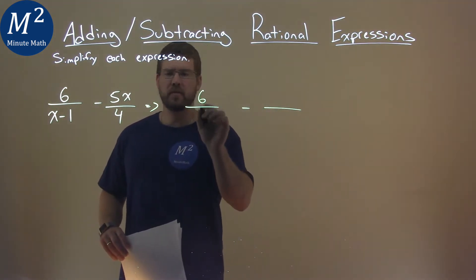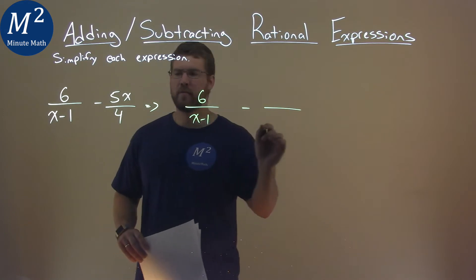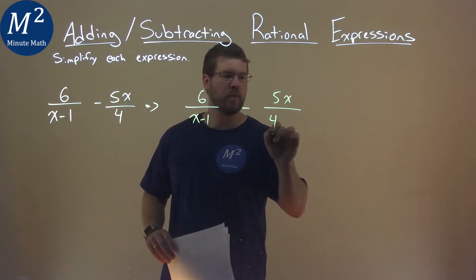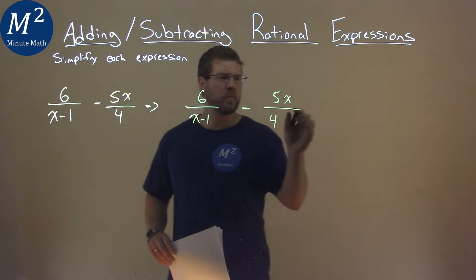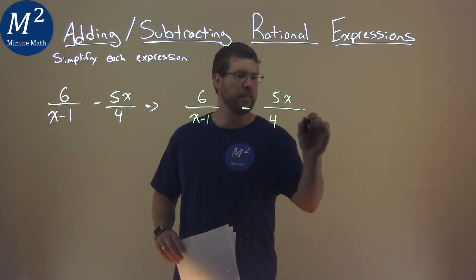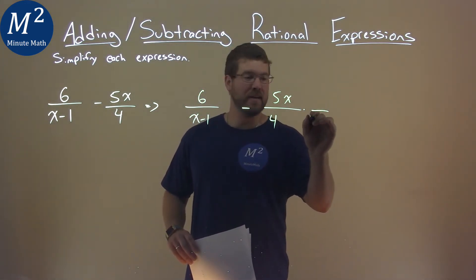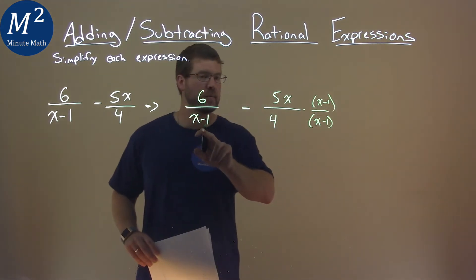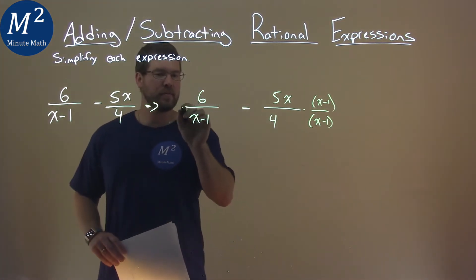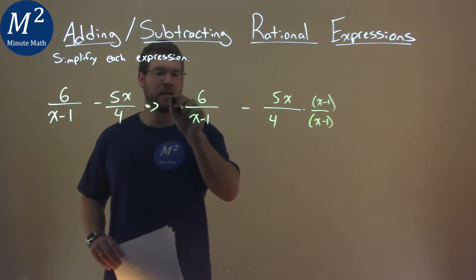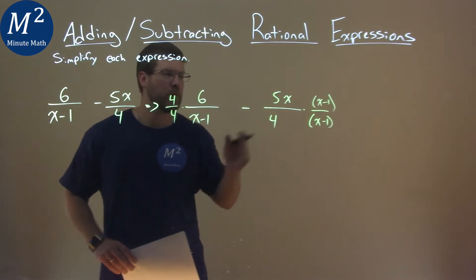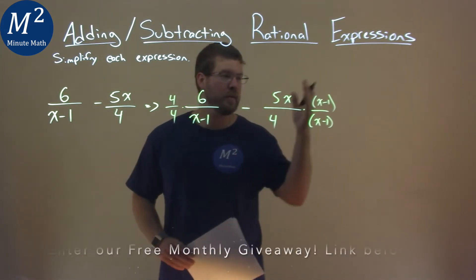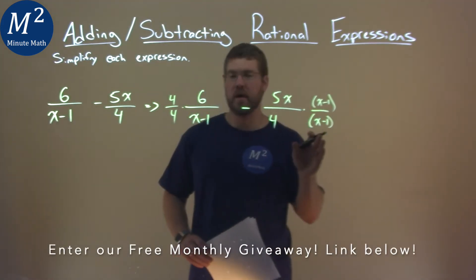I'm going to rewrite this: 6 over x minus 1, and 5x over 4. If I multiply the right-hand side by (x minus 1) over itself, and the left one by 4 over 4, we're essentially just multiplying by 1 — 4 over 4 is 1, and x minus 1 over x minus 1 is 1. But that allows us to come up with the same base.